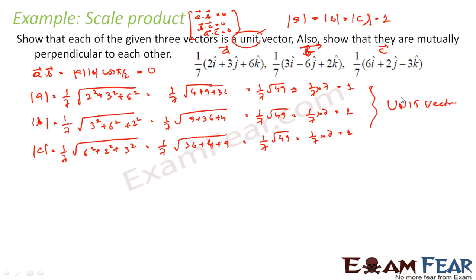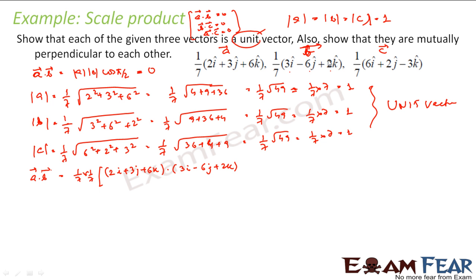Second, we need to prove that all are mutually perpendicular, so we have to find A dot B, B dot C, and A dot C, and prove that all these are 0. A dot B is 1 by 7 times 1 by 7, which is 1 by 49, into 2 times 3 plus 3 times minus 6 plus 6 times 2, that is 6 minus 18 plus 12, which is 18 minus 18 equals 0. So A and B are perpendicular.